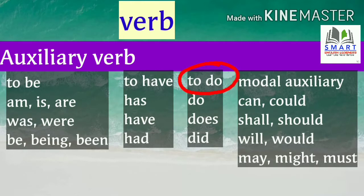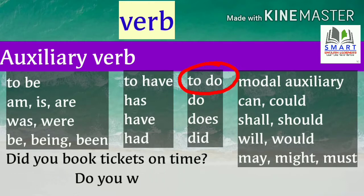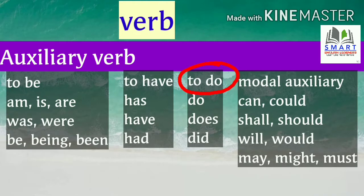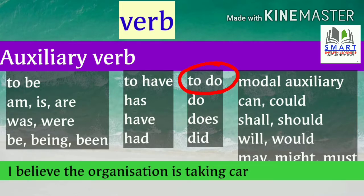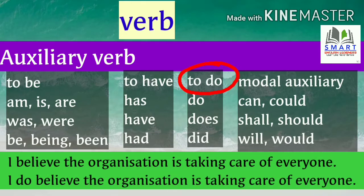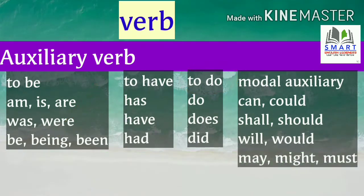Do, does, and did are mainly used to frame questions. For example: did you book tickets on time? Do you want me to help you? Do, does, and did are sometimes also used with a main verb to emphasize meaning. For example: 'I believe the organization is taking care of everyone' versus 'I do believe the organization is taking care of everyone.' Here, do is used to show emphasis.